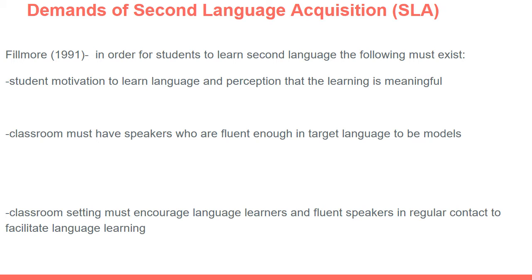Fillmore argues that for students to learn a second language, the following must exist: students must be motivated to learn the language and perceive it as meaningful. They also need speakers in the classroom who are fluent enough in the target language to serve as models — ideally the teacher and peers with a higher level of language proficiency. The classroom setting must encourage language learners to be fluent speakers and have regular contact with more proficient speakers.